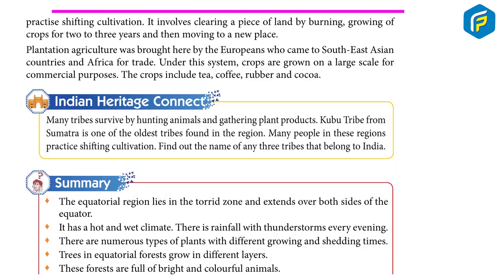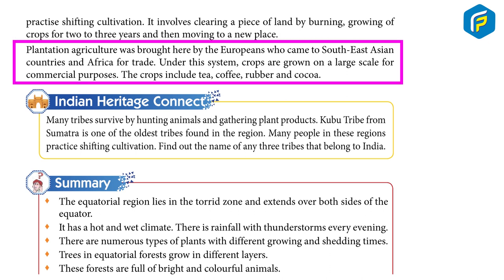The generally practiced shifting cultivation involves clearing a piece of land by burning, growing crops for two to three years, and then moving to a new place. Plantation agriculture was brought here by Europeans who came to Southeast Asian countries and Africa for trade. Under this system, crops are grown on a large scale for commercial purposes. The crops include tea, coffee, rubber, and cocoa.